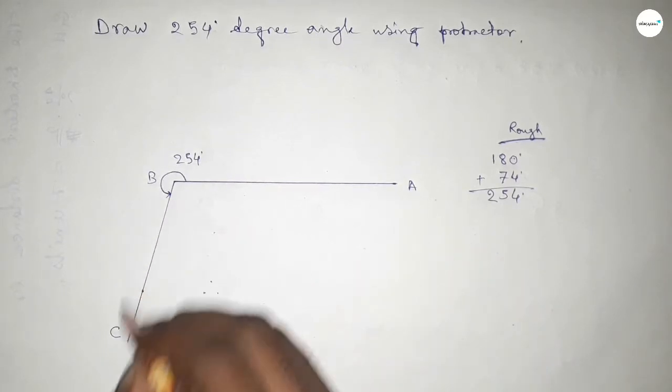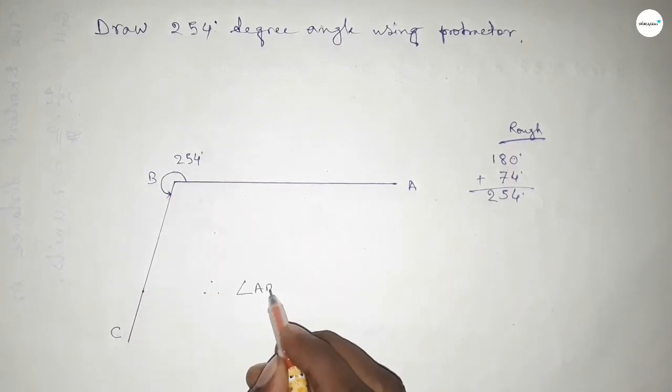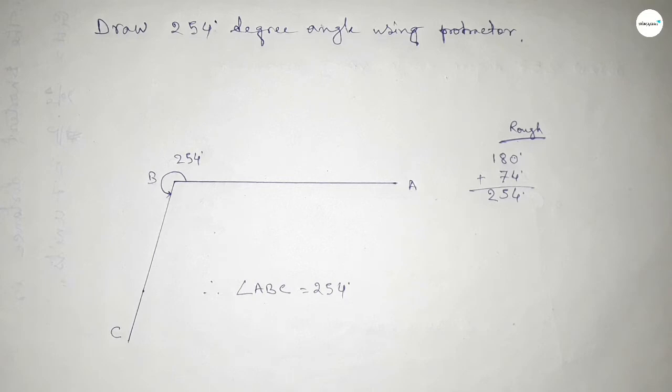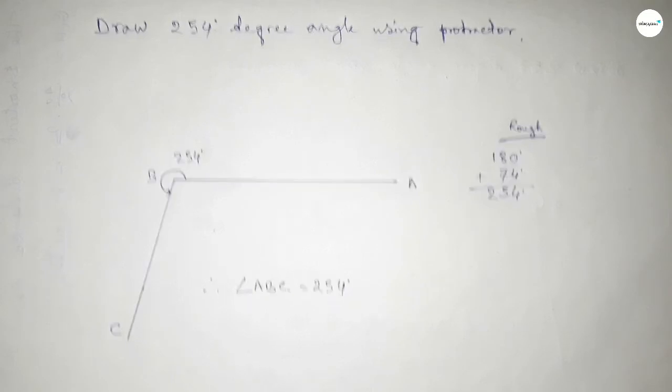Therefore, angle ABC equal to 254 degree angle. That's all, thanks for watching. If this video is helpful to you, then please share.